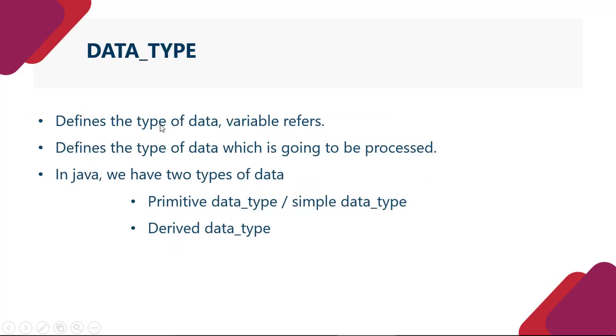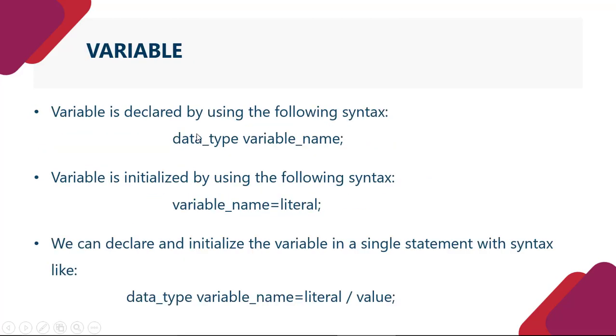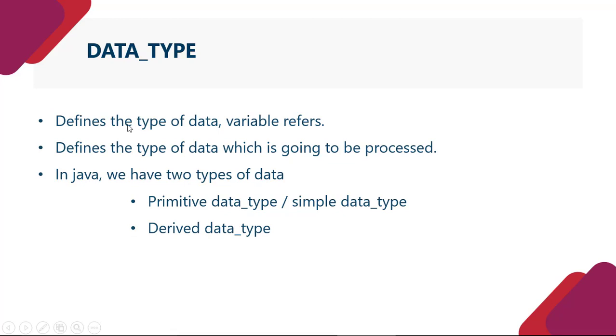Data type - jo sabse pehle wali cheez hai. Data type defines the type of data variable refers, defines the type of data which is going to be processed. In Java, we have two types of data. Ek hota hai primitive data type, ya phir simple data type, and second one is derived data type.